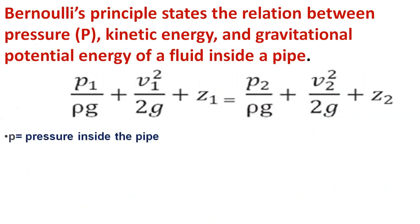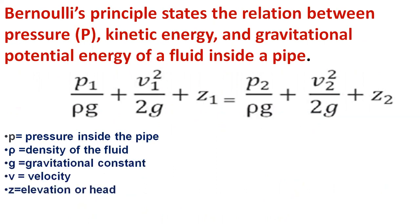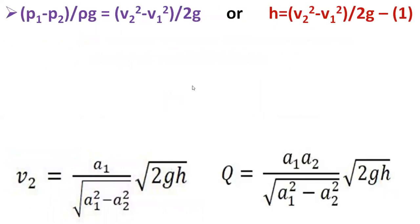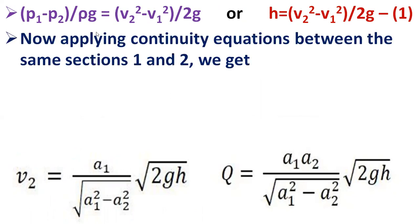In the mathematical equation of Bernoulli's principle: P is the pressure inside the pipe, rho is the density of the fluid, G is the gravitational constant, V is the velocity, Z is the elevation or height, A is the cross-sectional area of the pipe, and D is the diameter of the pipe. Suffixes 1 and 2 are used to denote two differential areas — 1 denotes the cylindrical inlet and 2 denotes the throat section. As the pipe is horizontal, Z1 equals Z2. Rearranging, we get: P1 minus P2 divided by rho G equals V2 squared minus V1 squared divided by 2G. This quantity P1 minus P2 divided by rho G is denoted as H, so H equals V2 squared minus V1 squared divided by 2G. This is equation 1.